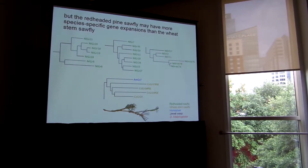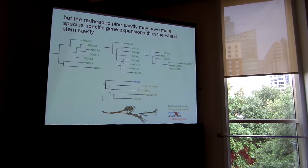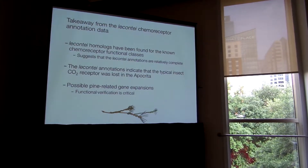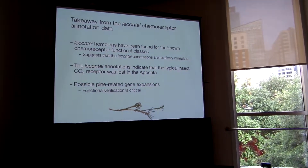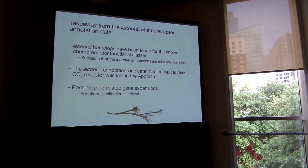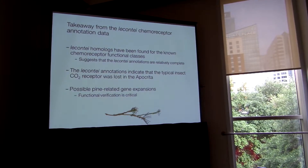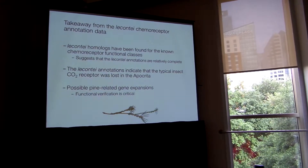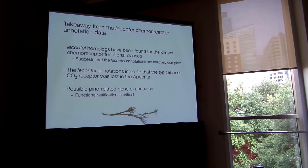However, it's important to note that the chemoreceptor data from the wheat stem sawfly is from a transcriptome as opposed to a full genome assembly, and so may be missing annotations. The takeaway is that I have a fairly complete annotation dataset for lecontii, the generalist. This dataset is already providing some interesting information about sawfly evolution. It's also really important to have functional validation, and in my case, I want to verify any putative host-specific genes.